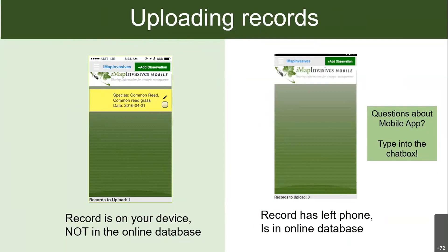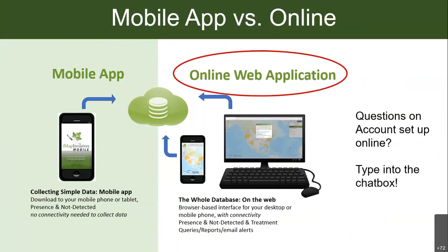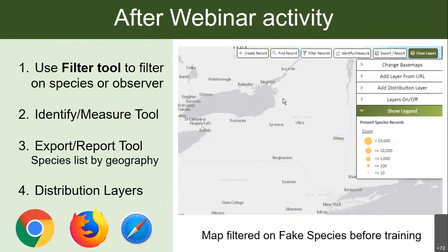Once data is uploaded it's no longer on the phone, so to view it go to the online web application. Some things you can do online: use the filter tool to filter for your own records, filter out fake species to see all your records, export data, export species lists by geography, and add distribution maps. We may have time for a live demo at the end, but I want to make sure we have time to get to the species Steve is going to present.